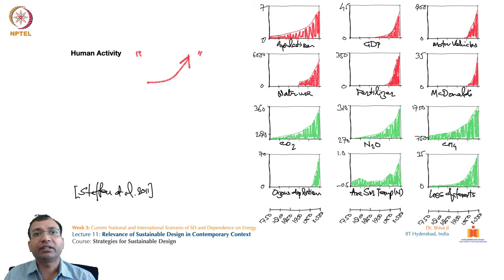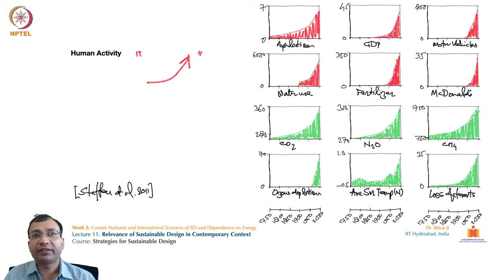The second graph shows the total real GDP. If you see, it was almost close to zero in the beginning year of 1750, measured in units of 10 to the power 12 dollars — a very small amount. But in the recent decade around the year 2000, it has reached almost 35 billion trillion dollars, which is a huge amount.